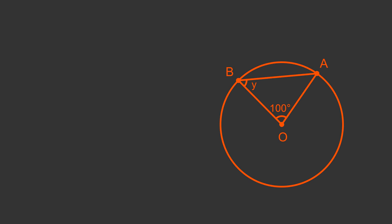In this second example we know the angle at center O. We want to find the angle B, which we will call angle Y. Once again we will use the fact that OAB is an isosceles triangle.